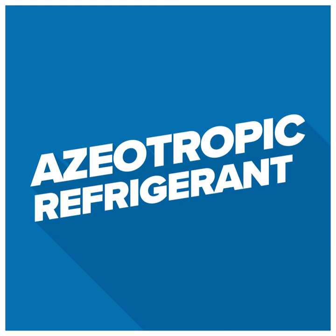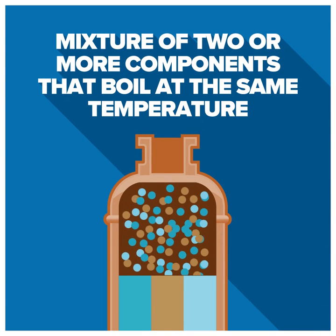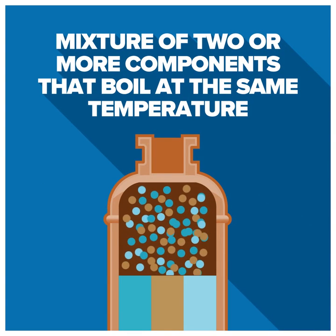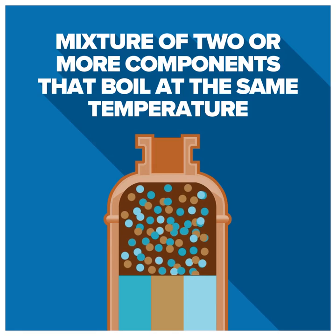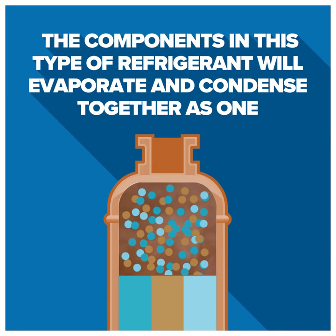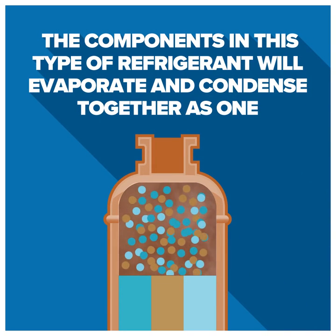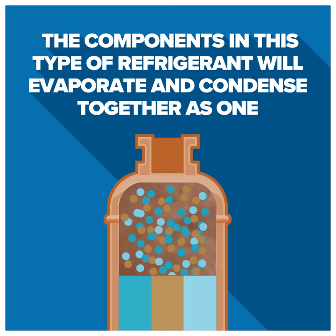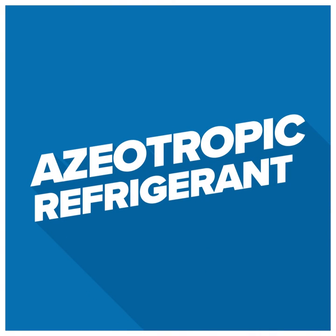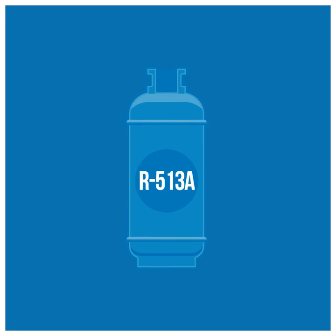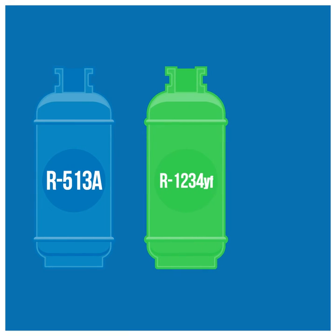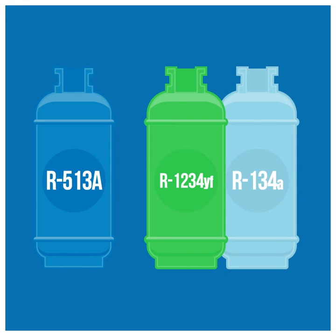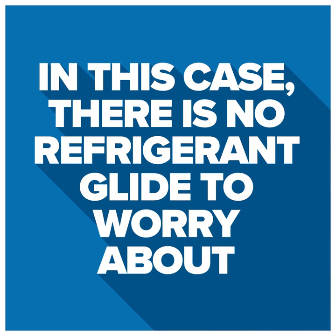An azeotropic refrigerant is a mixture of two or more components that boil at the same temperature. The components in this type of refrigerant will evaporate and condense together as one. An example of an azeotropic refrigerant is R513A, which is a blend of R1234YF and R134A. In this case, there is no refrigerant glide to worry about.